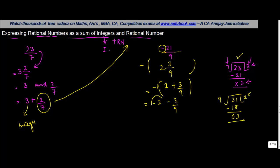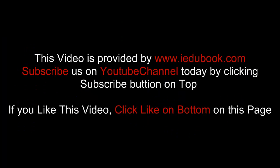So minus 2 is basically your integer. But because you have to express this as a sum, you write it as plus and keep the minus with each term. This is your rational number. That's the way you represent a rational number as a sum of an integer and another rational number.